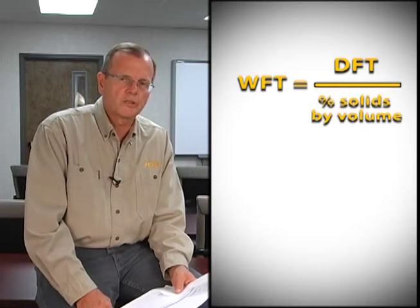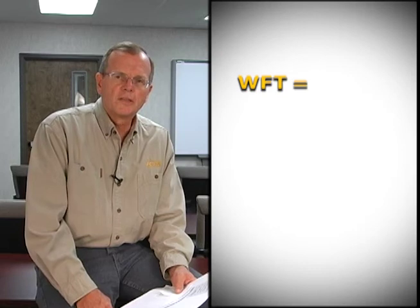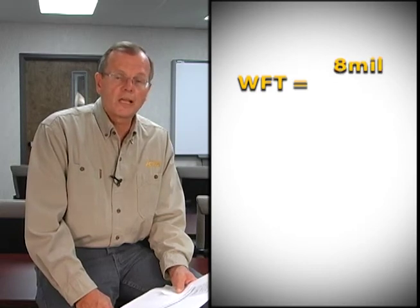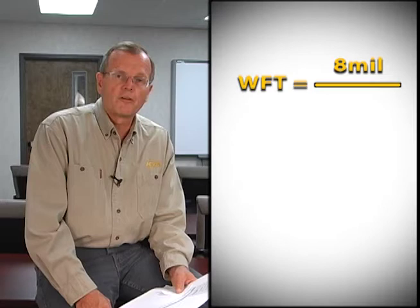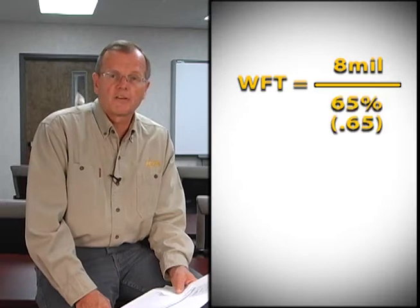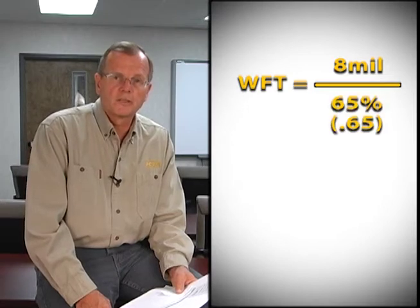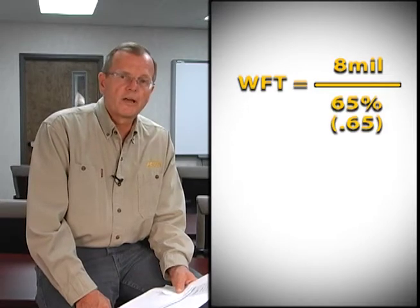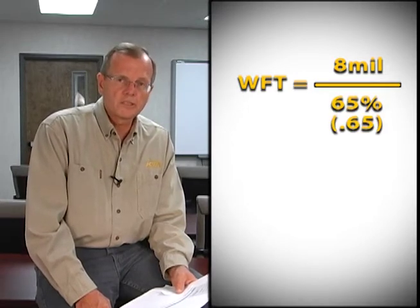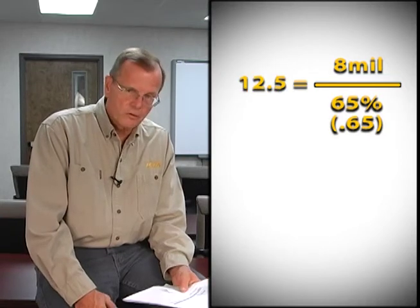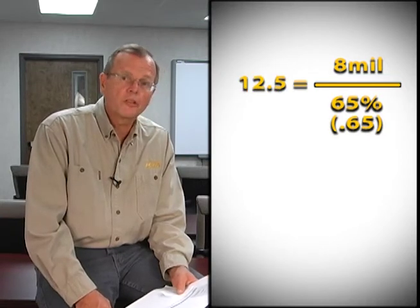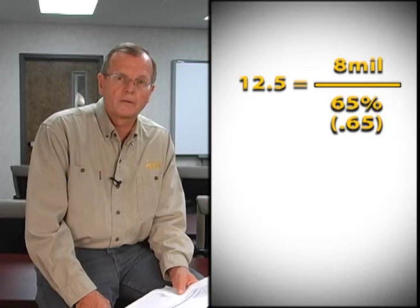Let's go through it. In this case, you might determine that you need an 8 mil dry film thickness and the solids by volume is 65 percent. So you divide 8 by 0.65 and that will give you the wet film thickness to apply — about 12.3, or 12 and a half mils wet.